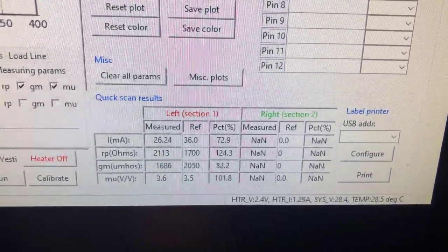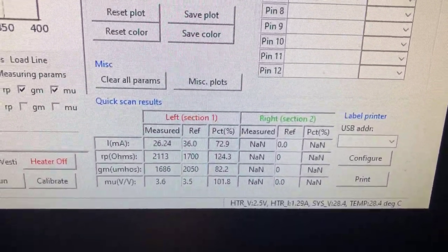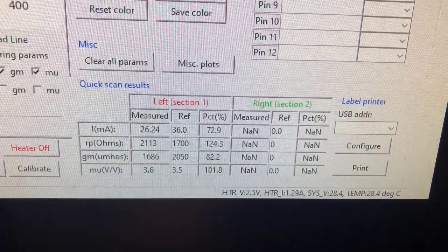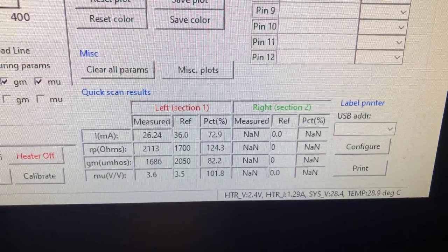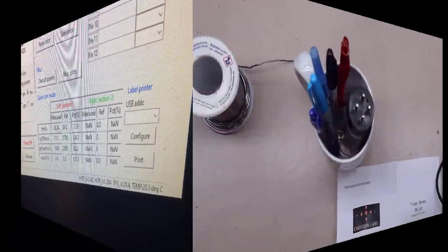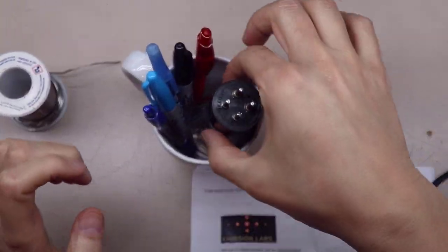We actually got slightly better results this time. It might be because we've got good soldered connections and good crimps there. But we picked up 82% on the micromhos and 72.9% on the current. Okay. Here's what we're going to do now.